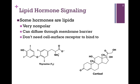On the screen, we have an illustration of the structure of two such hormones. Thyroxin on the left, one of the thyroid hormones, also referred to as T4 because of the four iodine molecules, and cortisol on the right. As you can see in each case, very non-polar substances, so they would readily traverse that very non-polar environment of the membrane.